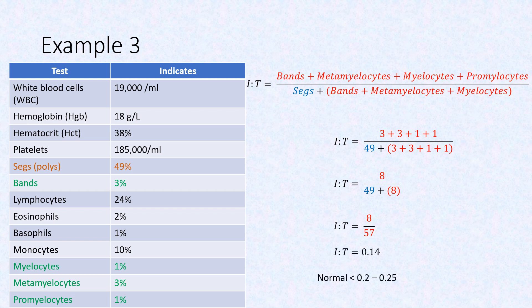Recall that a normal IT ratio is less than 0.2 to 0.25, so this ratio is reassuring for no infection.